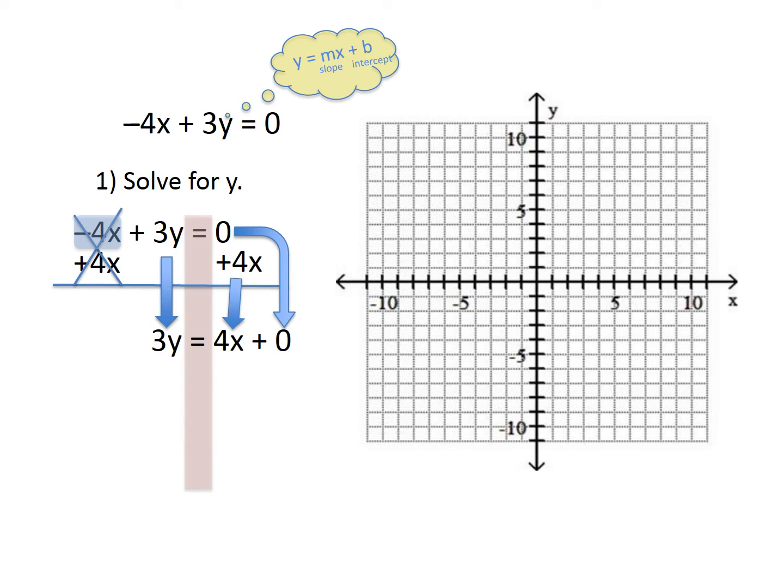Our new equation now is 3y = 4x + 0 after we added the 4x. To get y by itself, we need to divide by 3. So we're going to take that 3 and divide it. I see 3 terms, so we're going to divide it in 3 places: right there, under the 4x, and under the 0.